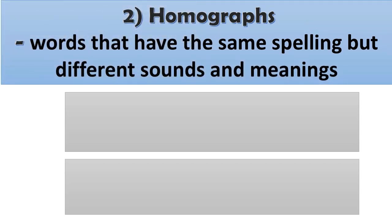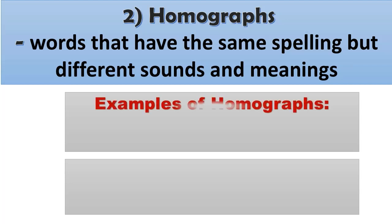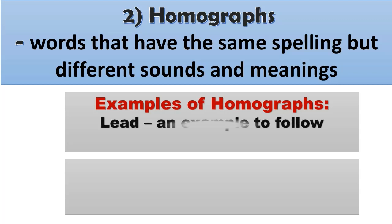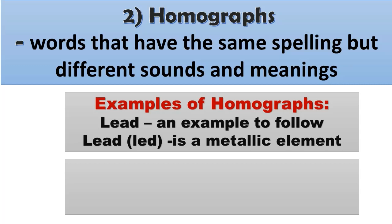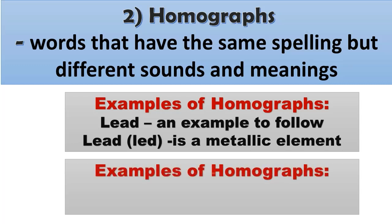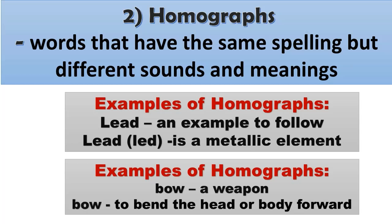Homographs are words that have the same spellings but have different sounds and meanings. Example: 'lead' — an example to follow, versus 'lead' — a metallic element. Another example: 'bow' — a weapon, versus 'bow' — to bend the head or body forward.